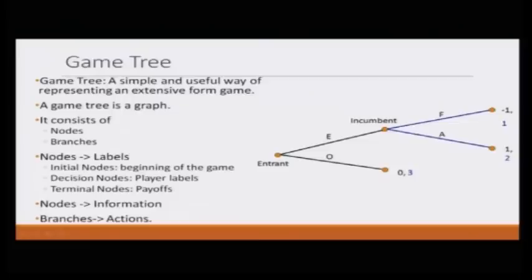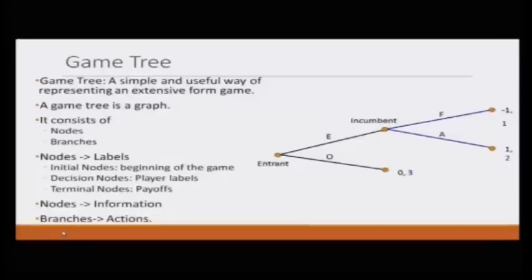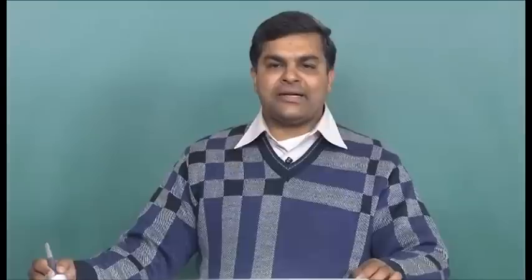The game tree is the best way to represent an extensive form game. A game tree is made of nodes and branches — basically it is a graph. Nodes represent one of three things, and there are three different kinds: initial nodes, decision nodes, and terminal nodes. Branches indicate the action taken at the node.